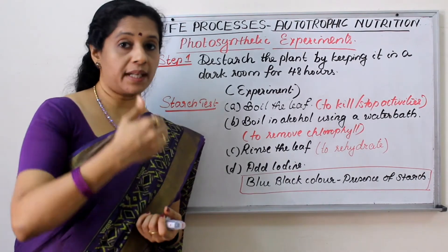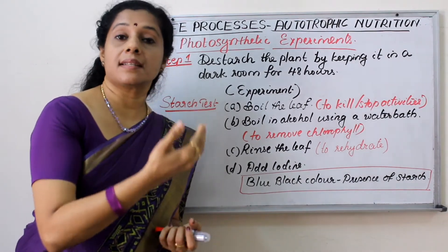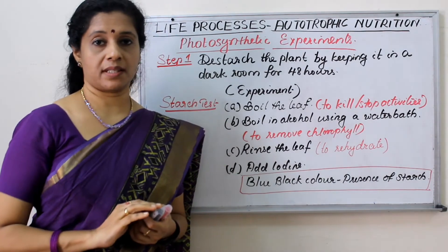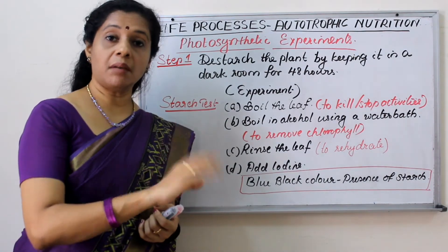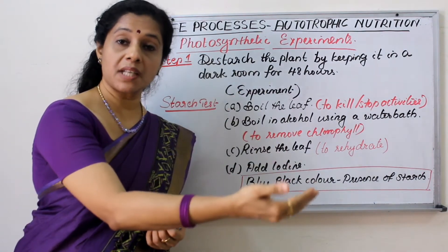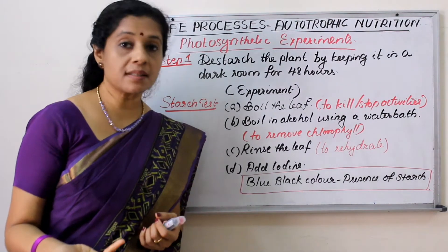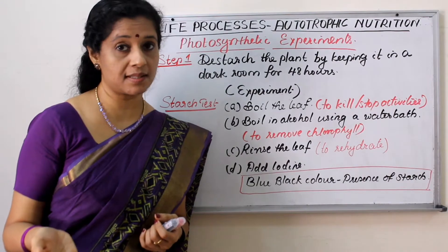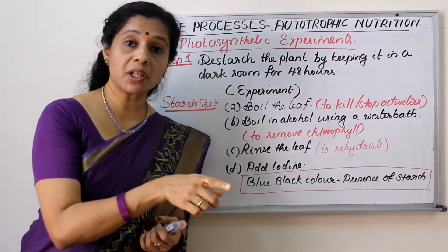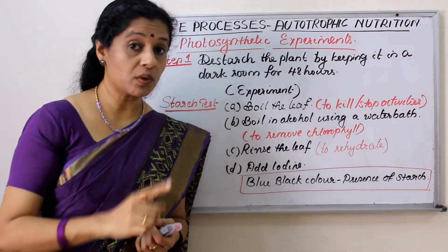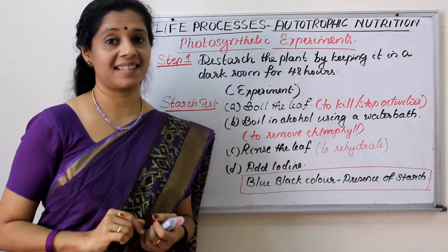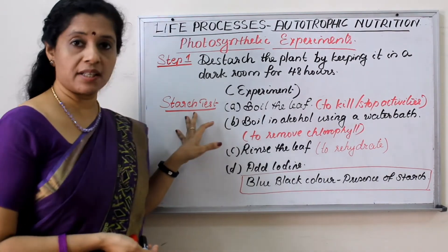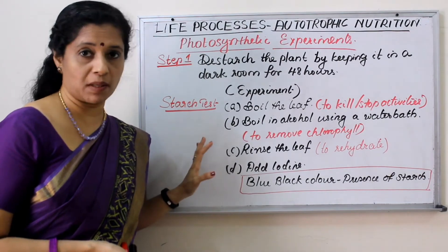So if I want to test whether carbon dioxide is necessary for photosynthesis, I don't give carbon dioxide. Without carbon dioxide, if starch is forming, photosynthesis has taken place and carbon dioxide is not necessary. But if there is no starch formation, then carbon dioxide was necessary for photosynthesis. So the final stage should be the starch test for any photosynthetic experiment.